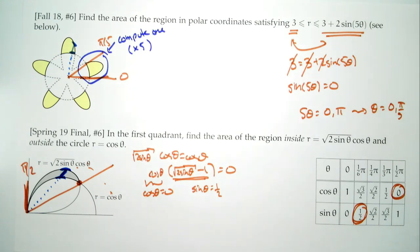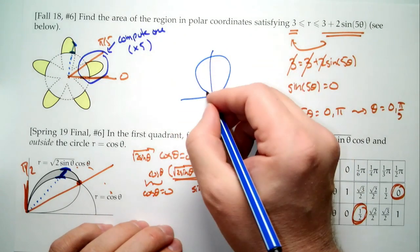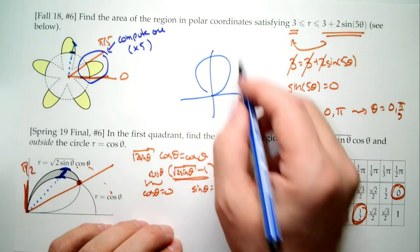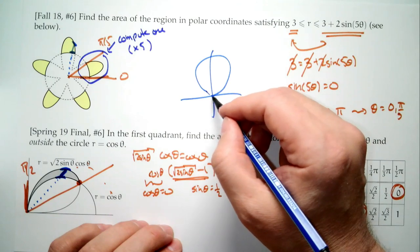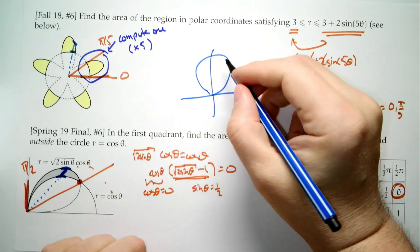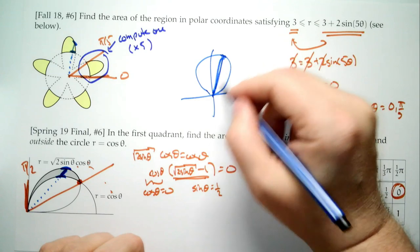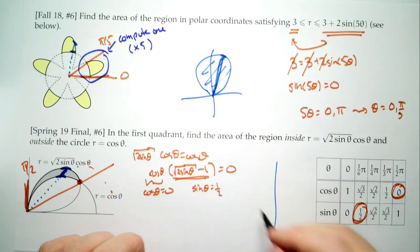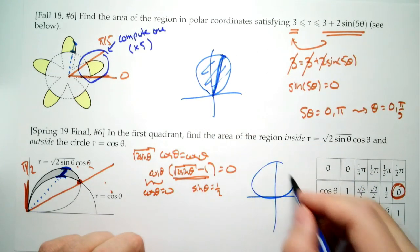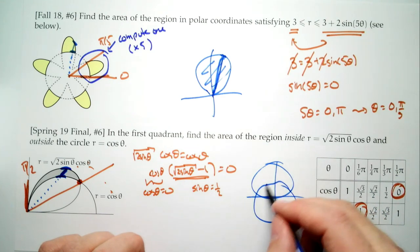It might be the case that you have a region where in one part the outside curve is one function and in another part it's the other function. We once had a problem with that shape — a strange function. In that case, the inside curve could even be zero, meaning you go all the way in to the origin. Be flexible.